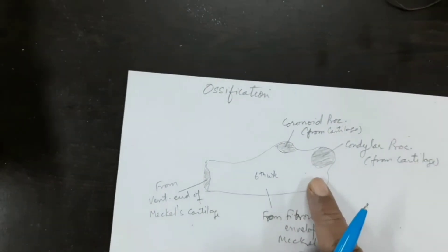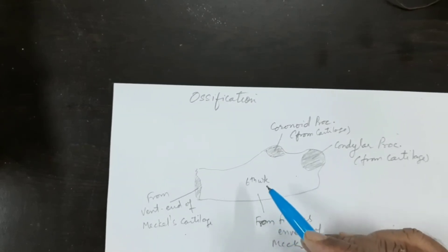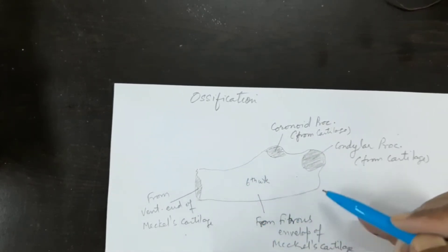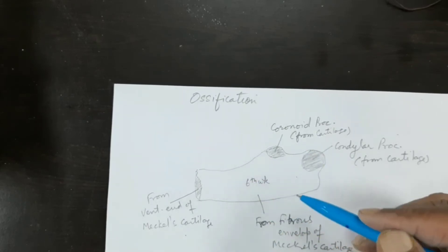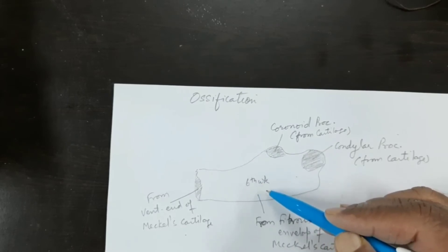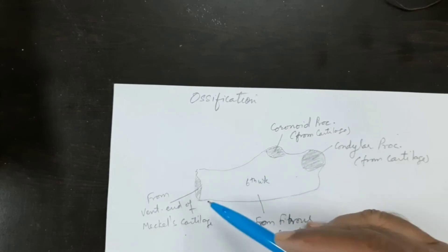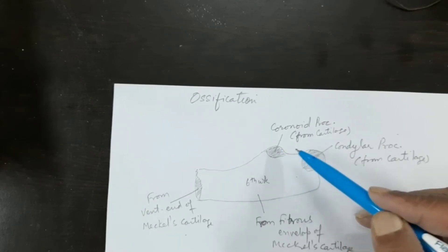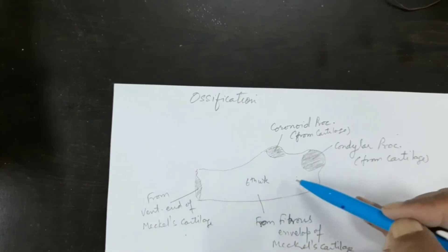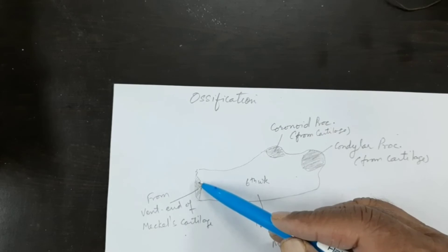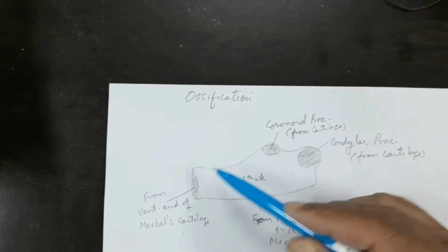Now let us go to the ossification of the mandible. The mandible partly develops in membrane and partly by cartilage. Most of the mandible develops in membrane, which is the fibrous envelope of Meckel's cartilage, in which the center of ossification in membrane appears at the sixth week of intrauterine life and forms the bone. The ends have cartilaginous ossification: the coronoid process is cartilaginous, the condylar process is cartilaginous, and the anterior end of Meckel's cartilage also undergoes cartilaginous ossification.